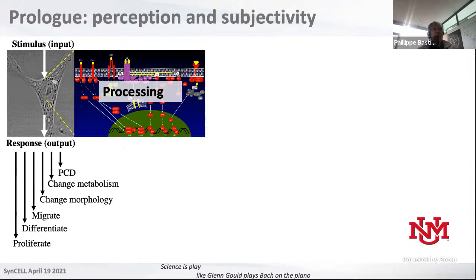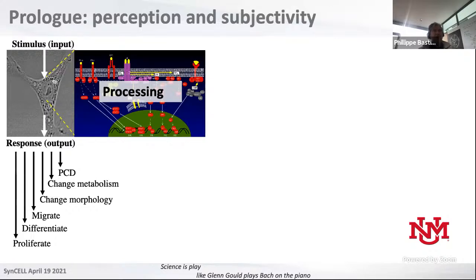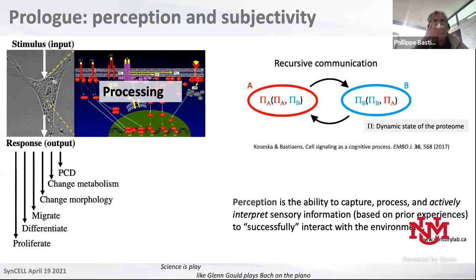If you look in general at how biological systems like cells process information, it's basically like a computer does — an input, a stimulus, can be a growth factor or a sensing input. Then there's a processing part, typically giving these blobograms where you see a flow of information, giving a unidirectional causality toward a response. My perception is that this is very much like machine thinking — like living systems operate like machines.